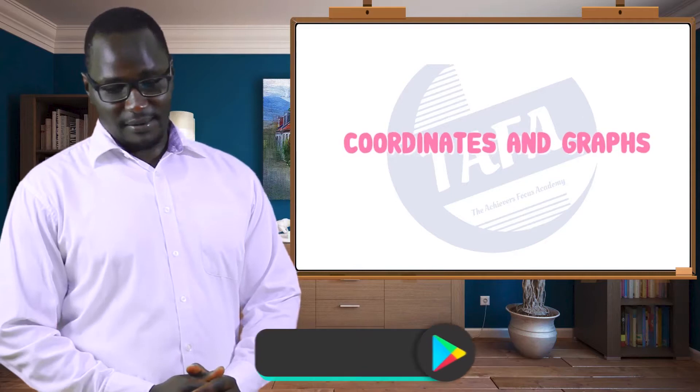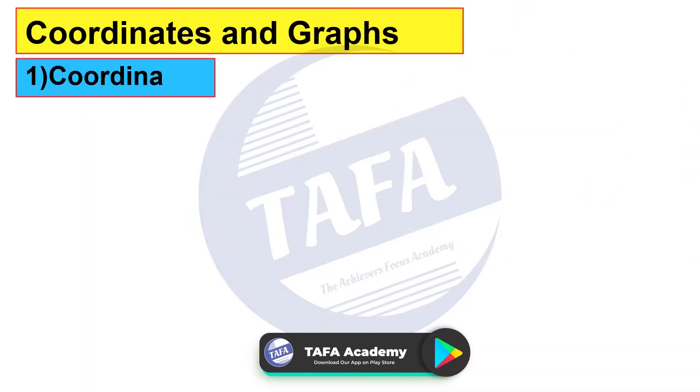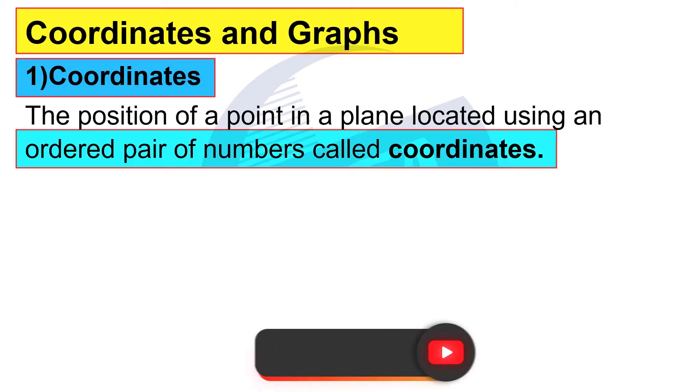Coordinates and graphs. Now we are going to start by looking at coordinates. The position of a point in a plane is located using an ordered pair of numbers called coordinates.